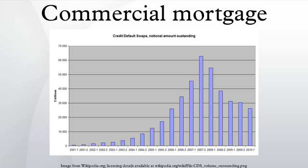Providers of commercial mortgages — Banks: Banks, large and small, are traditional providers of commercial mortgages. According to the Federal Reserve, banks held $1.5 trillion of commercial mortgages on their books as of June 30, 2013.